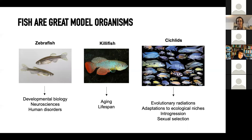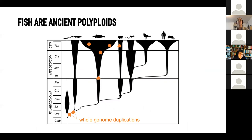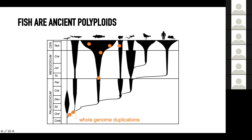There are also plenty of different fish used as model organisms for different questions. For example, the killifish is becoming a prominent model to study aging and lifespan. Cichlids have been used for many years to understand how evolutionary radiations occur, how species adapt to ecological niches, and questions around aggression and sexual selection. One of the main characteristics of fish is that they are ancient polyploids — they have undergone whole genome duplications, where the entire genome becomes duplicated.